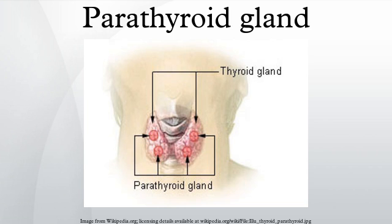Phosphate: PTH is the major regulator of serum phosphate concentrations via actions on the kidney. It is an inhibitor of proximal tubular reabsorption of phosphorus. Through activation of vitamin D, the absorption of phosphate is increased.